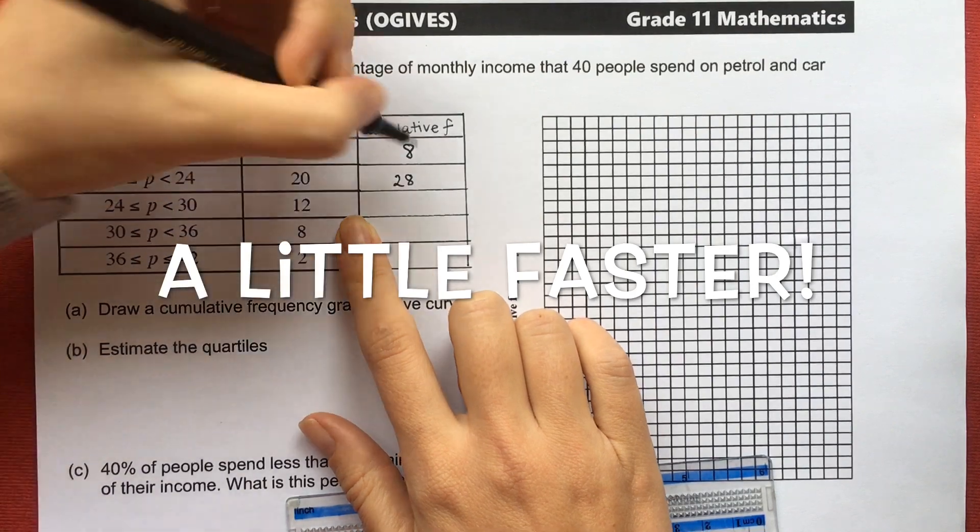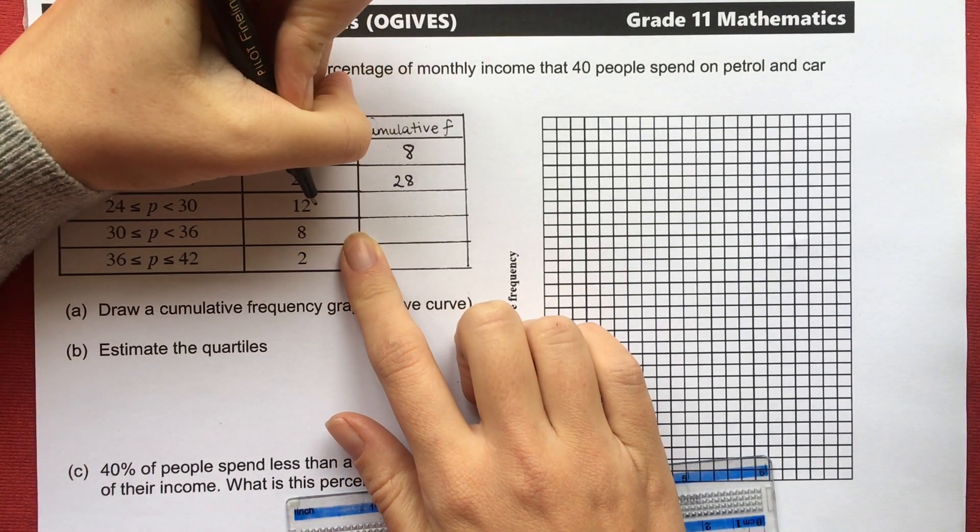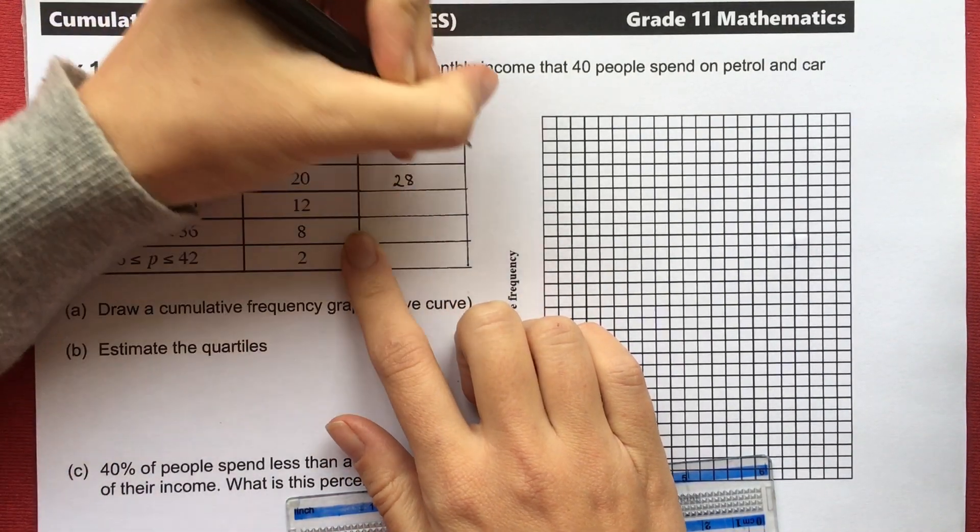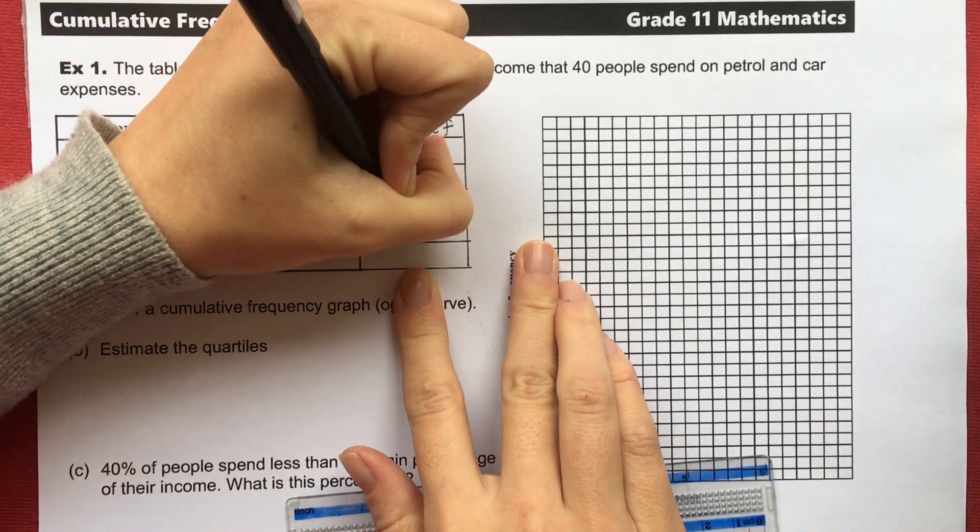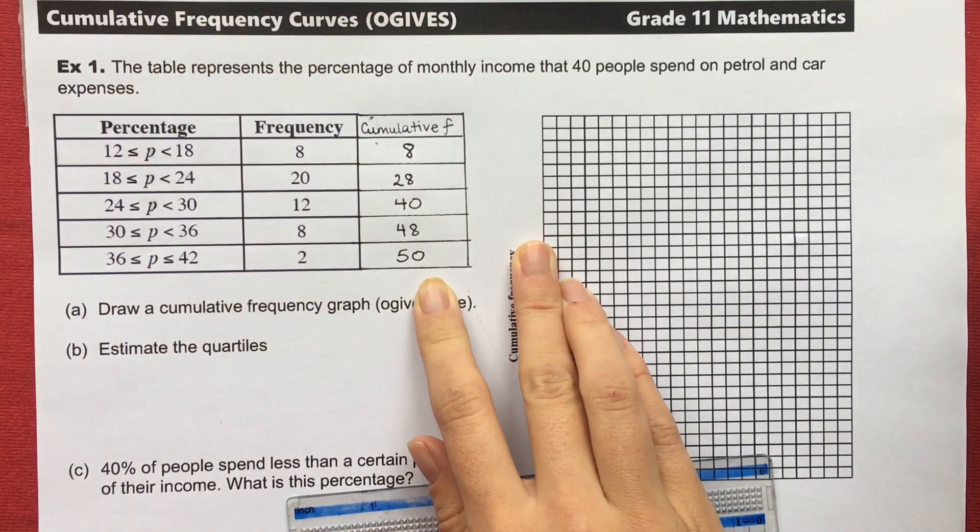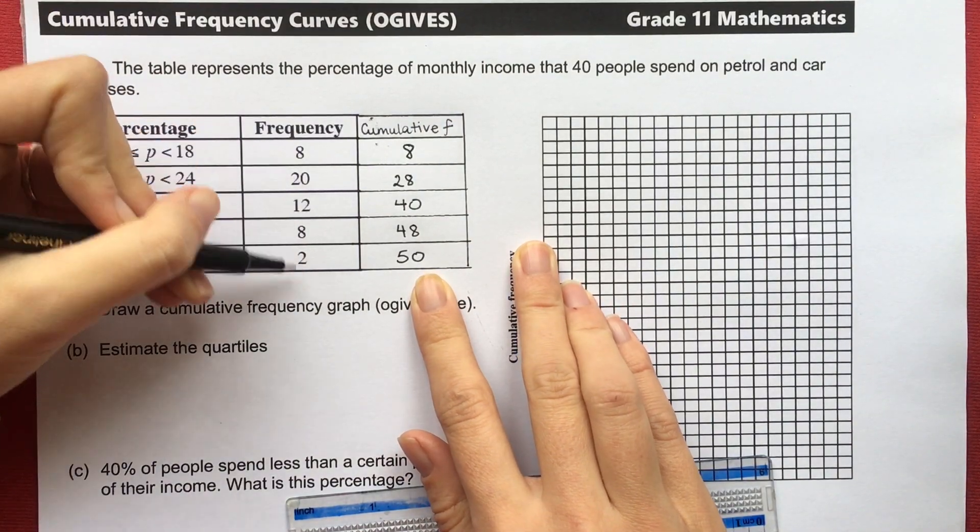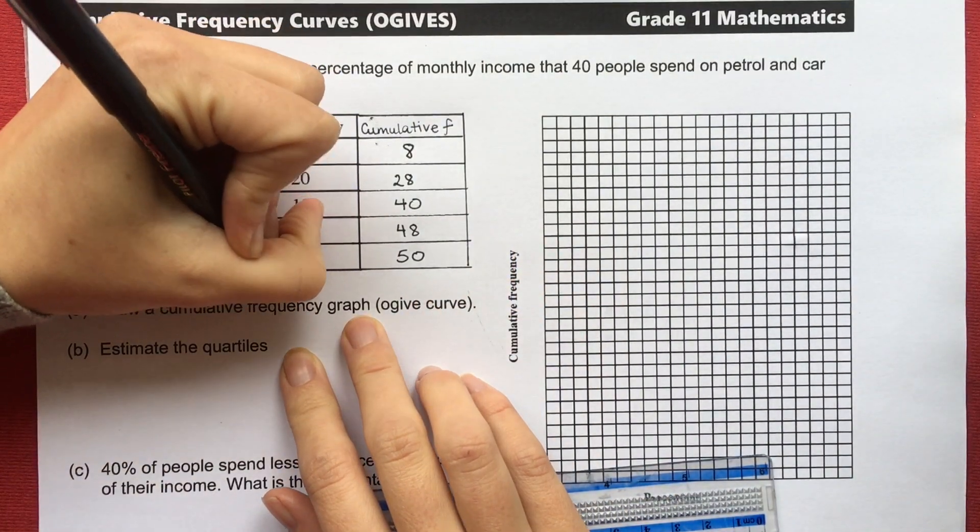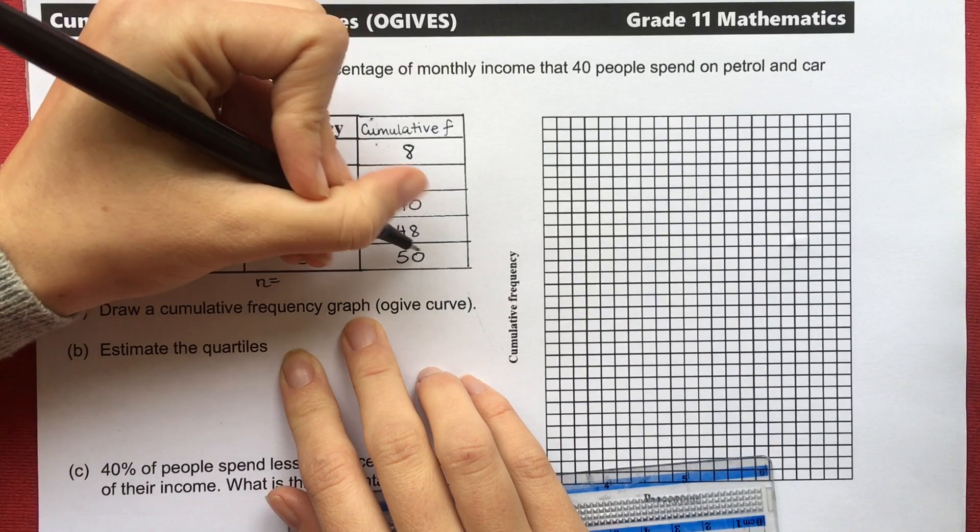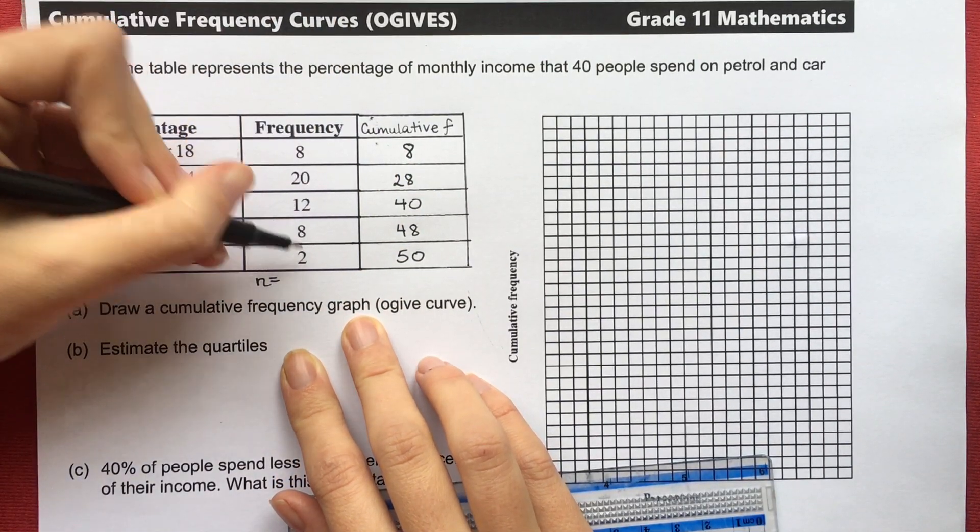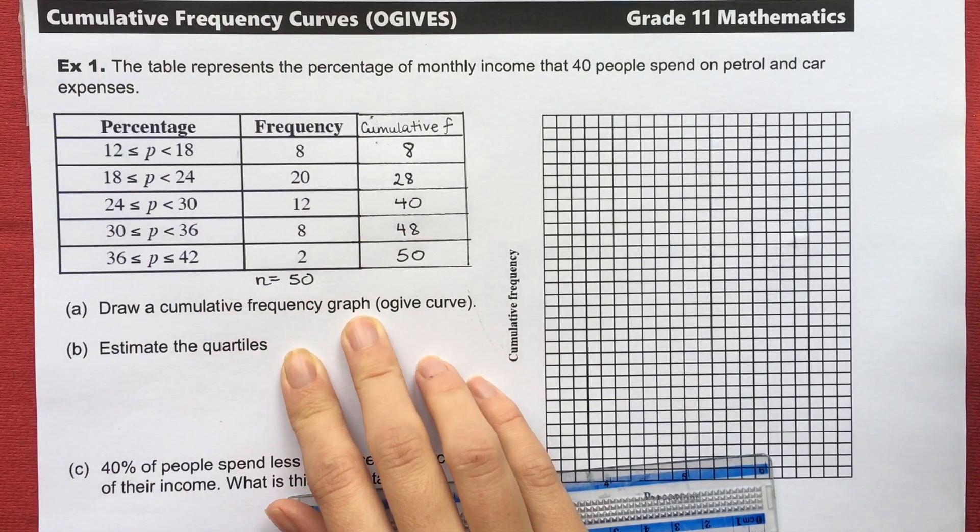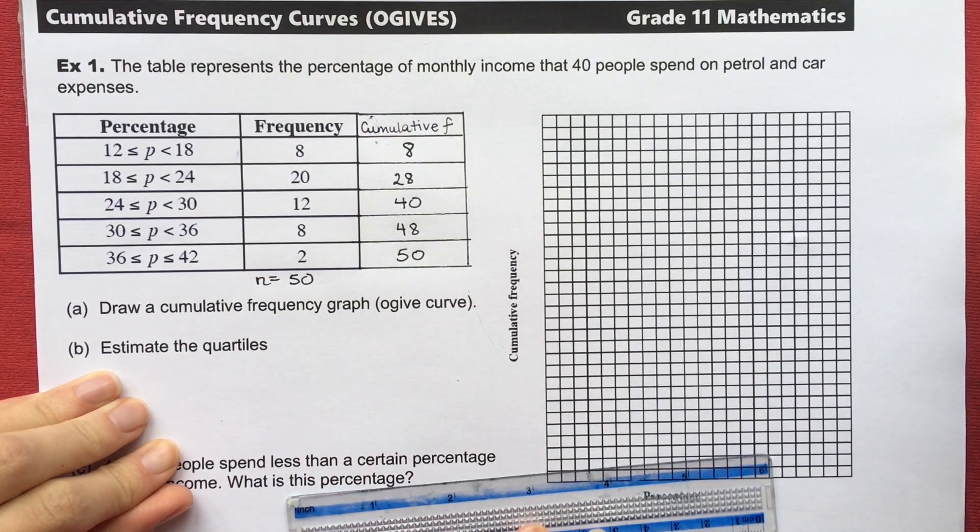Then in the next interval I've gone through 8 plus 20 which is 28 values. Summing all three or I can sum diagonally like Mr. Wu said in his video. So we get 28 plus 12 which is 40. I have 48 and I have 50. Let's just double check by adding these together because the n value, my number of values, should add up to whatever my final cumulative frequency is here at the bottom. So 8, 28, 40, 48, 50. Okay so that checks out.